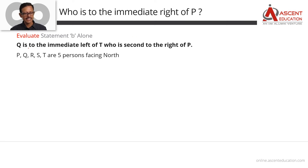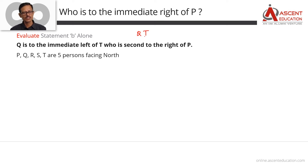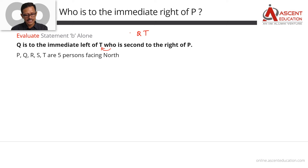Statement B says: Q is to the immediate left of T, and T is second to the right of P. So T is placed with Q immediately to T's left. And T is second to the right of P — meaning P, then immediate right is one person, then T is second to the right of P. So we have data about P, Q, and T.